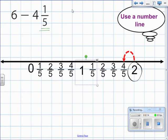Now be careful, your answer is not 4 fifths. There's still a whole number that is attached there which is 1. My final answer is 1 and 4 fifths. Check your work: 1 and 4 fifths plus 4 and 1 fifth should give you 6.